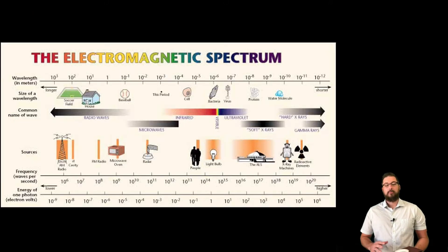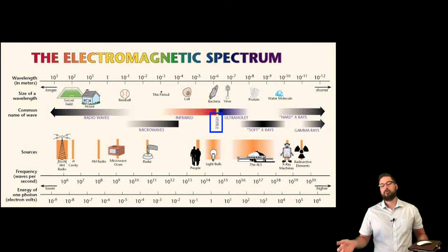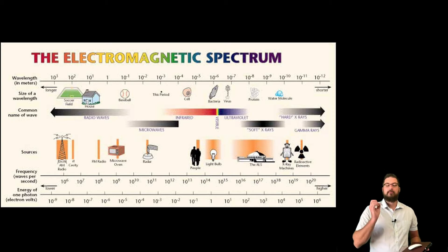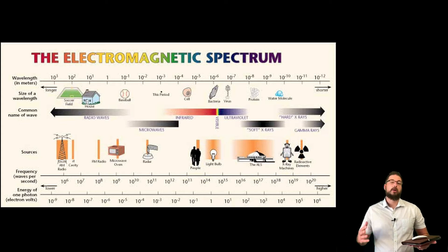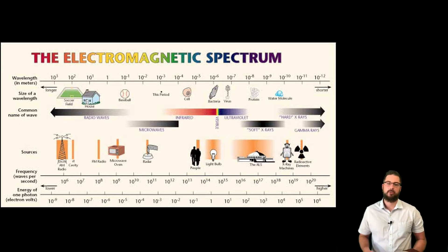This is the electromagnetic spectrum. Visible light is a little bit to the right of the middle, and on either side we have infrared and ultraviolet — they are the same type of thing, just with different energies. We also have radio waves, microwaves, gamma rays, and x-rays. All of those are part of the electromagnetic spectrum — they're all photons, just with different energies associated with them.